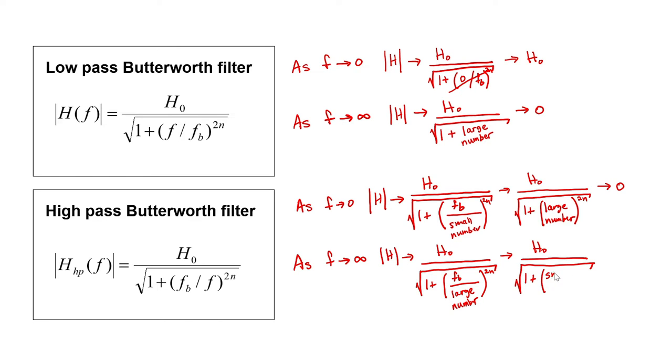We can now see that this transfer function appropriately describes the behavior of a high-pass filter because when the frequency is small, the output is zero, and when the frequency is high, the output approaches its DC value, so it passes the high frequencies and it blocks the low frequencies.